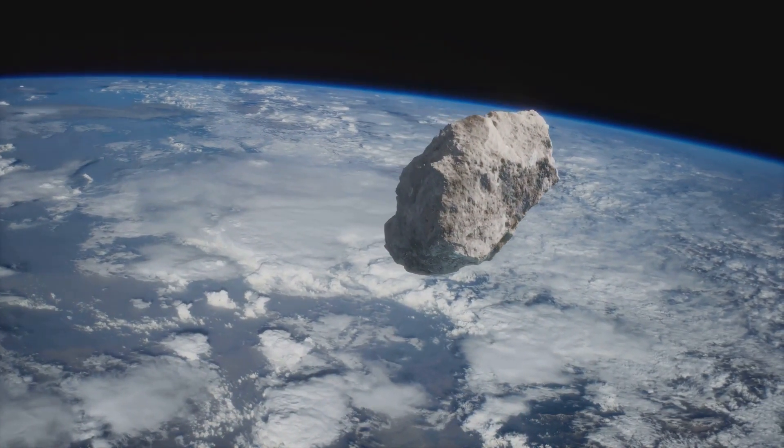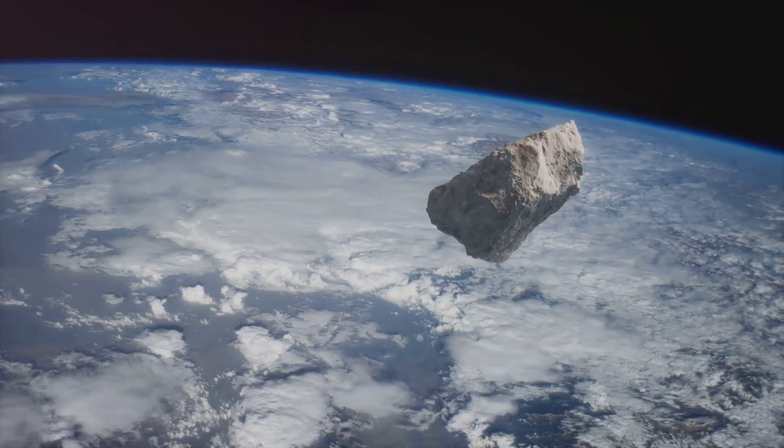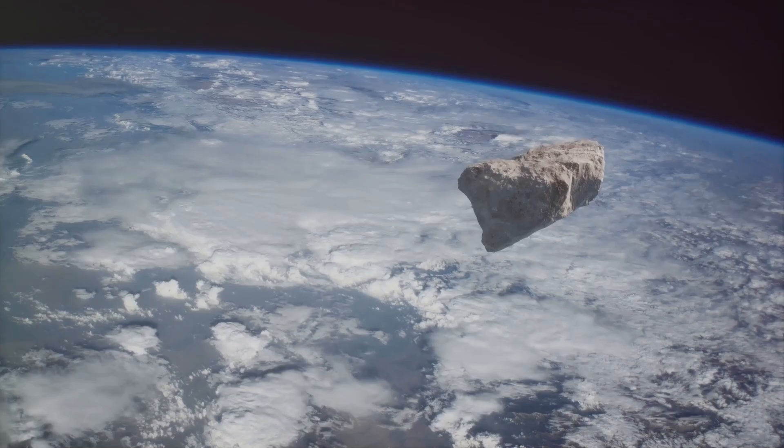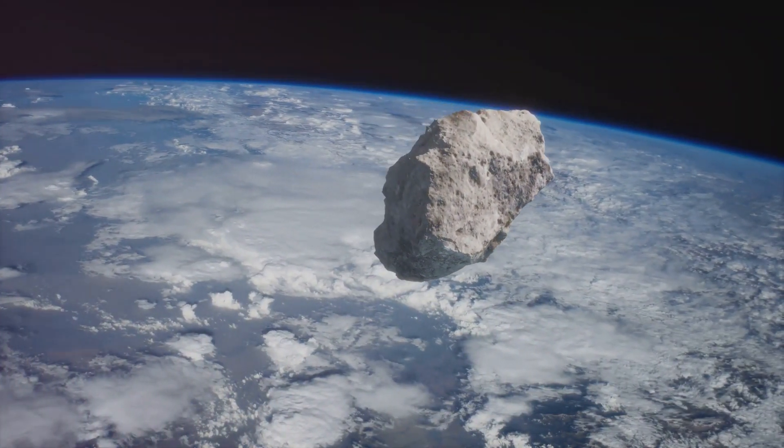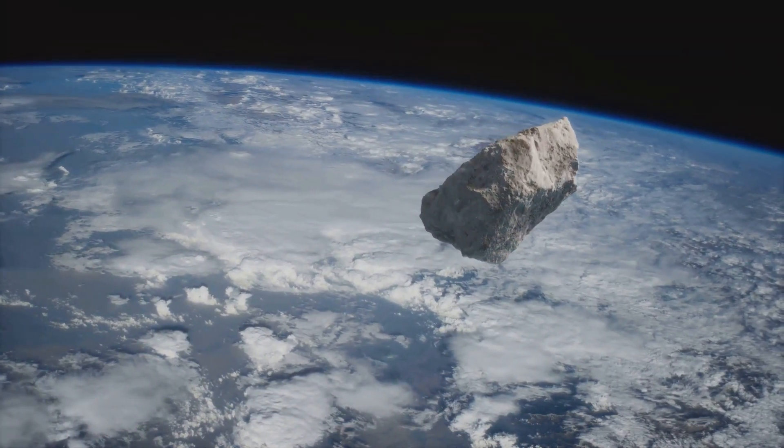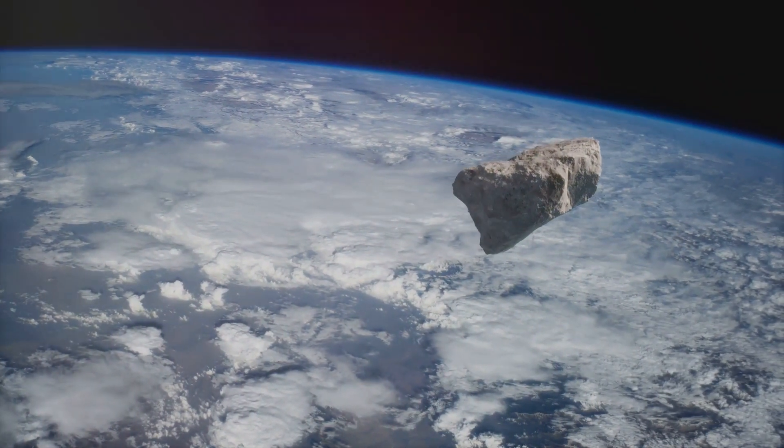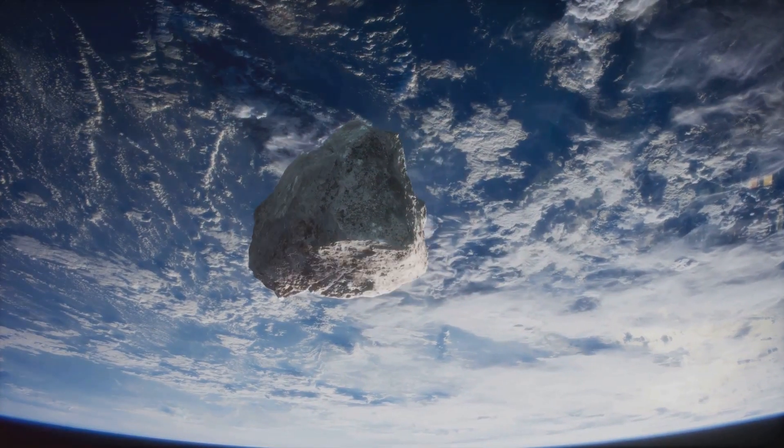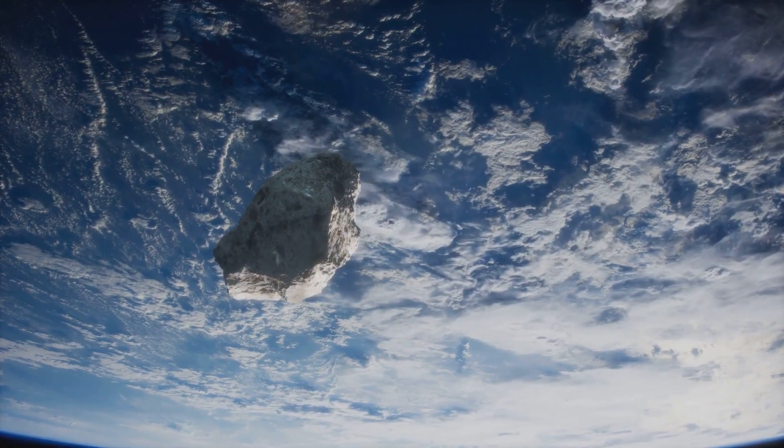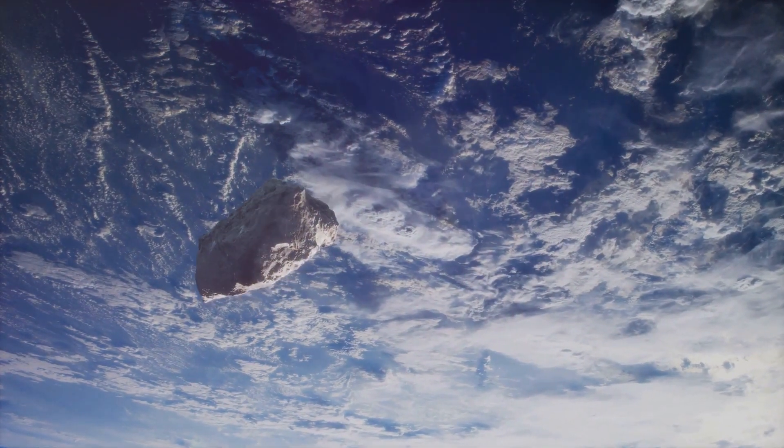This is known as orbital mechanics, and it's a bit like trying to predict where a thrown ball will land, only on a much larger scale. Now this might sound straightforward, but it's anything but. Space is vast, and even a tiny error in measurements can lead to a huge mistake in predicting an asteroid's path. That's why scientists often track these objects over years, even decades, refining their predictions with each new observation.